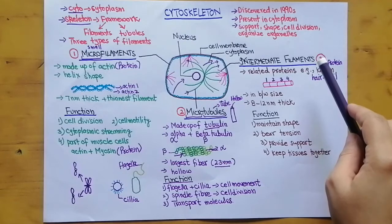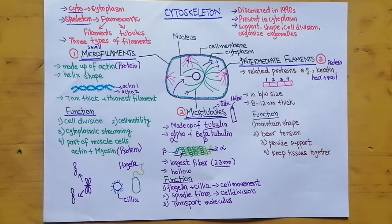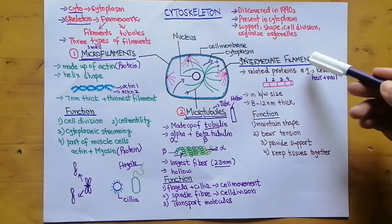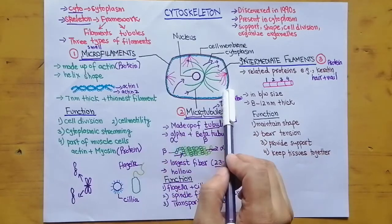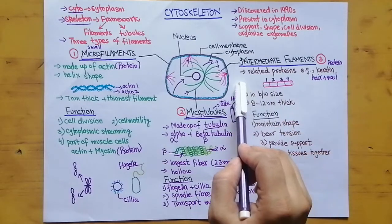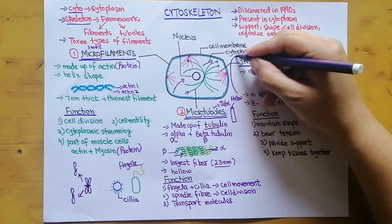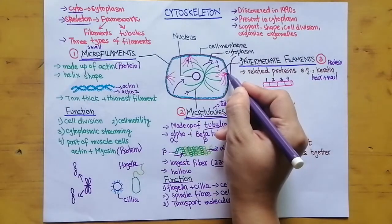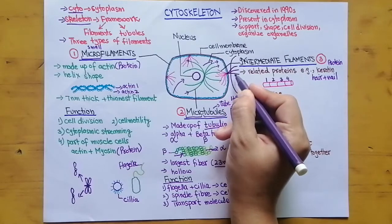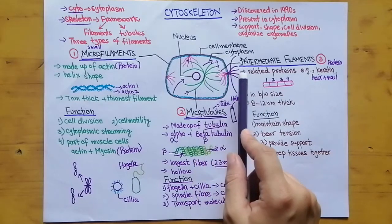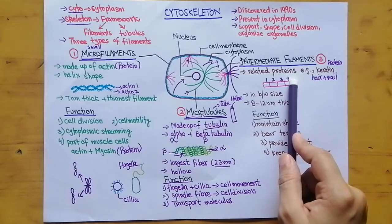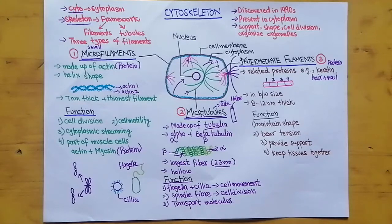Intermediate filaments provide structural support through their proteins. For example, hair contains intermediate filaments — if you pull your hair, you can feel the strength and tension they can bear. Additionally, intermediate filaments keep tissues together by extending from one cell into neighboring cells, linking cell 1 to cell 2, and cell 2 to cell 3, thereby holding tissues together.